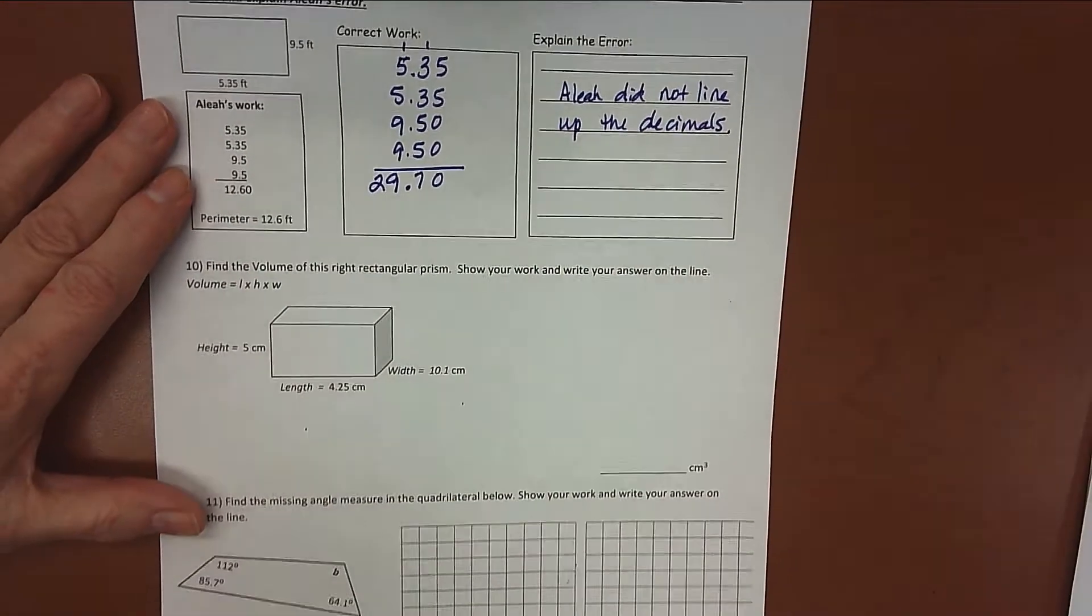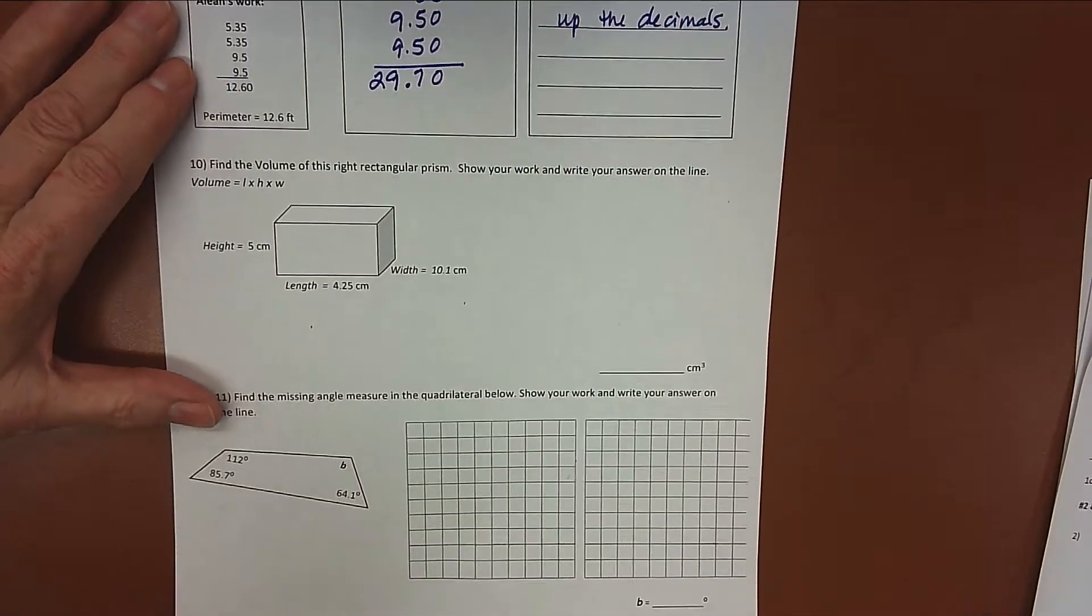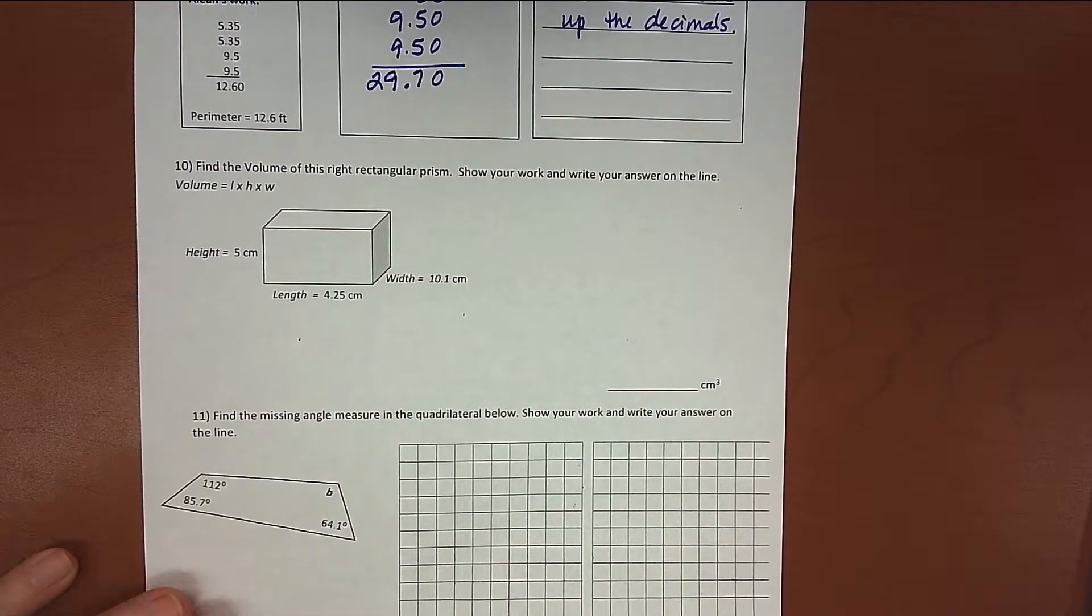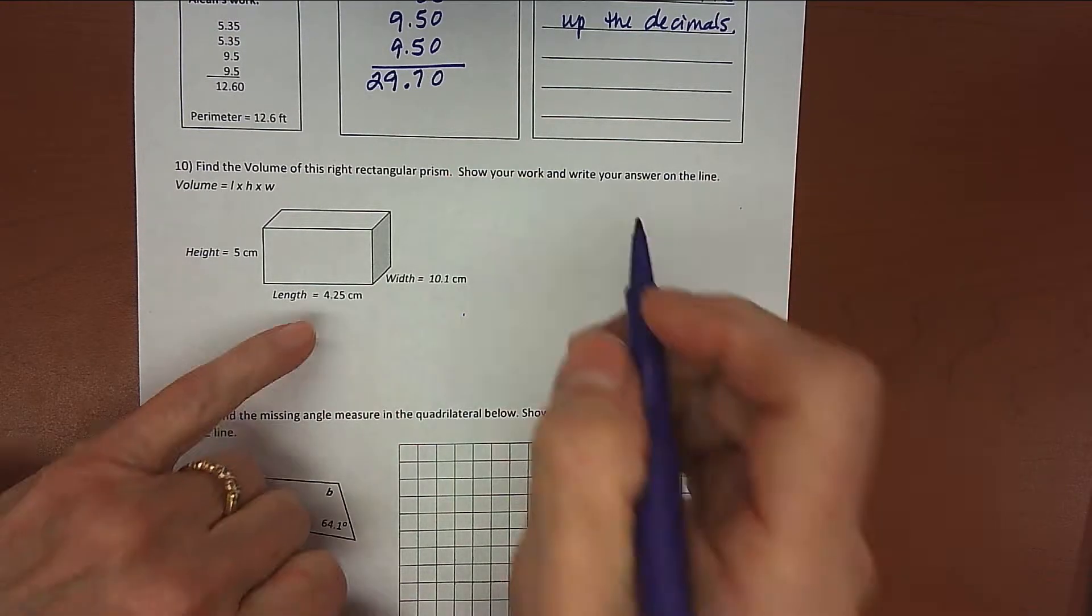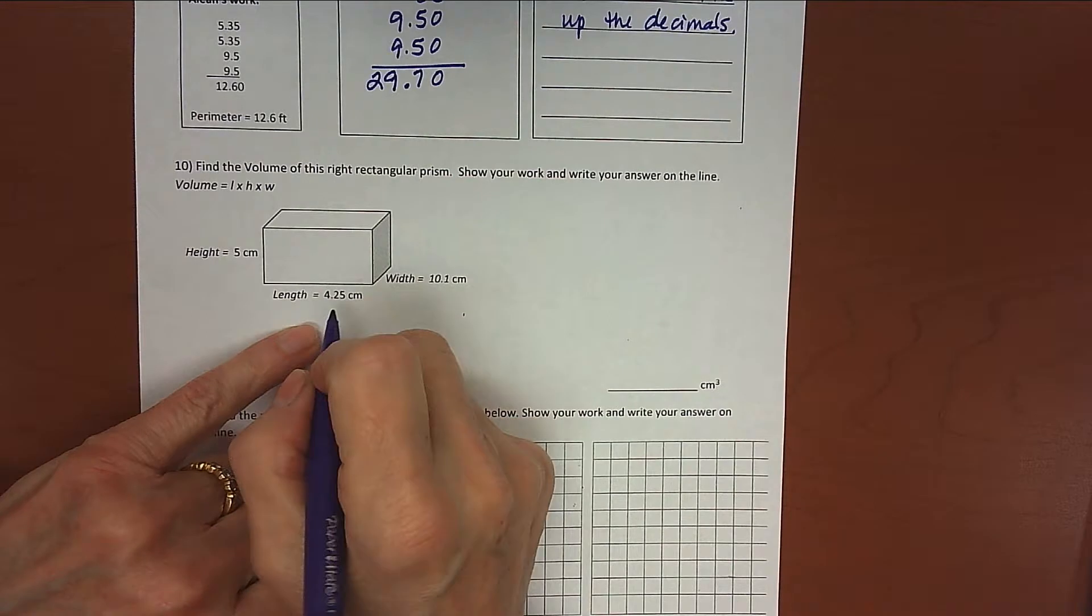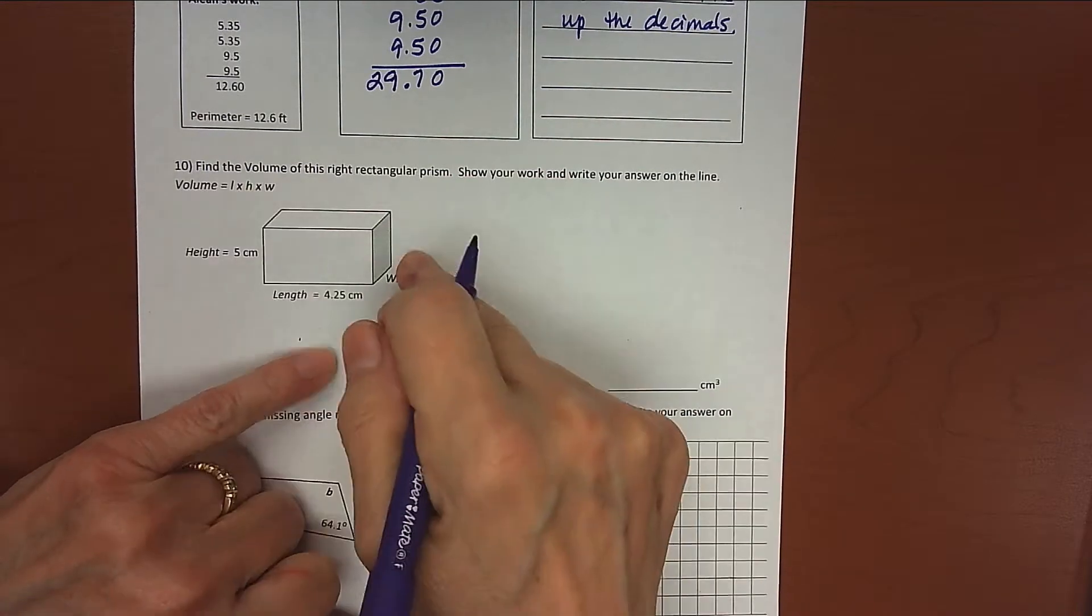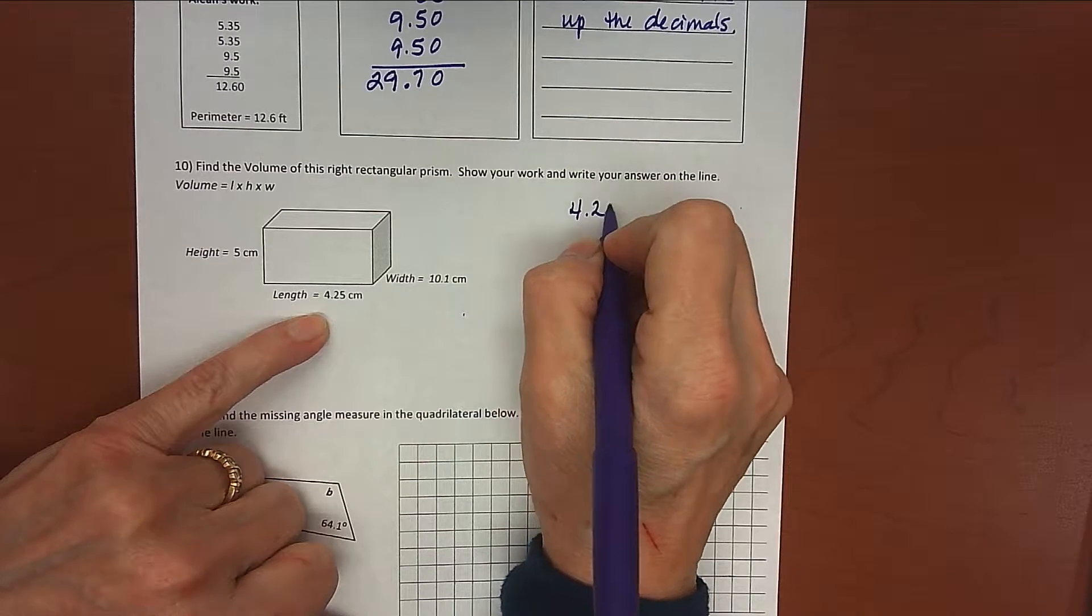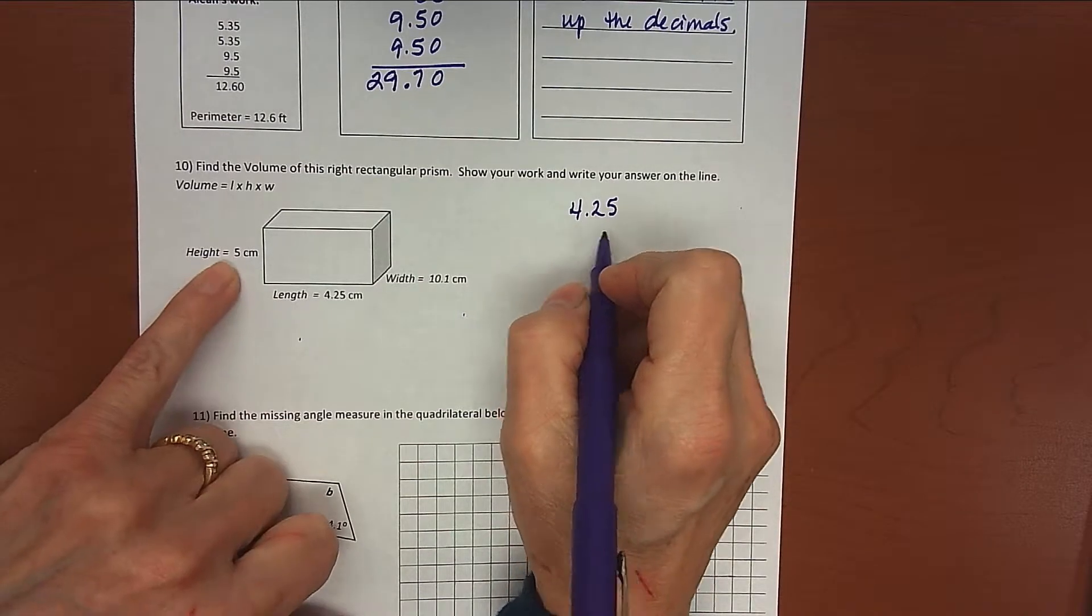All right, number 10 says find the volume of this right rectangular prism, show your work, and your answer on the line. So we're going to do the length times the width times the height. First of all, I'm going to be multiplying all these numbers together, but I need to start with two of them. So I'm going to take the 4 and 25 hundredths, and I'm going to multiply that by the 5.